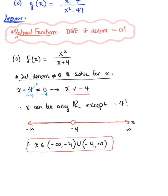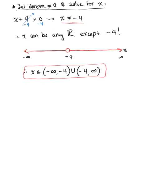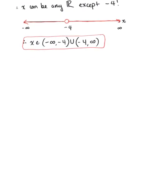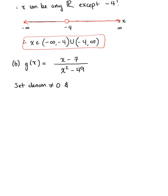Now let's move on to part B. We are given the function g(x) = (x − 7) divided by (x² − 49). Again, we're working with a rational function. To find the domain, we set the denominator not equal to zero and solve for x. So x² − 49 cannot be equal to zero.